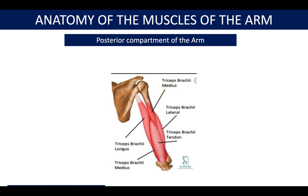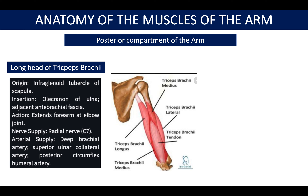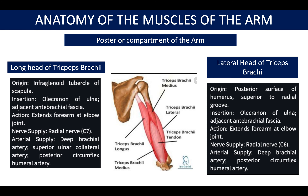The posterior compartment of the arm includes the triceps brachii: the long head, the lateral head, and the medial head. The long head originates from the infraglenoid tubercle of the scapula. All three heads insert into a common tendon which inserts into the olecranon of the ulna. The nerve supply is the radial nerve, and the arterial supply includes the superior ulnar collateral artery, posterior circumflex humeral artery, and deep brachial artery.